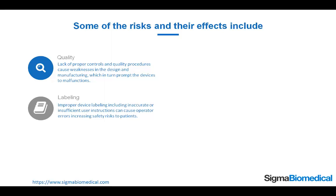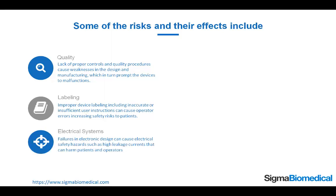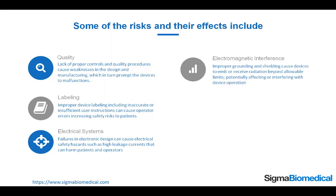Labeling: improper device labeling, including inaccurate or insufficient user instructions, can cause operator errors, increasing safety risks to patients. Electrical systems: failures in electronic design can cause electrical safety hazards such as high leakage currents that can harm patients and operators. Electromagnetic interference: improper grounding and shielding cause devices to emit or receive radiation beyond allowable limits, potentially affecting device operation.